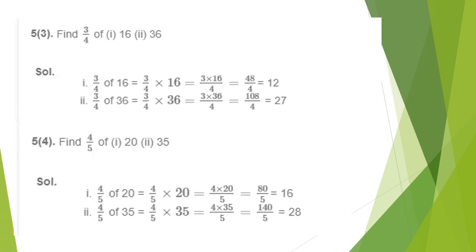Question 5, third part: 3/4 of 16. In the same way, we write 3/4 × 16 = 3 × 16 ÷ 4. Since 4 is common, we cancel with 4 and get the answer as 12.